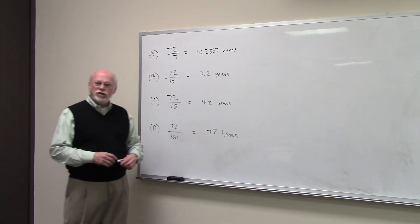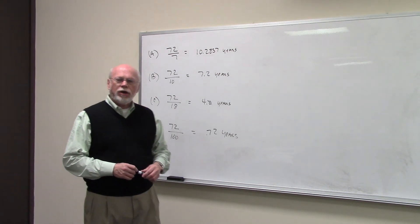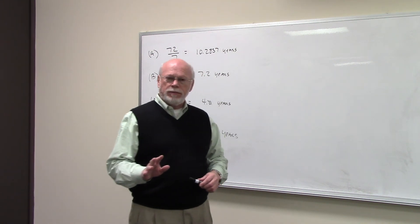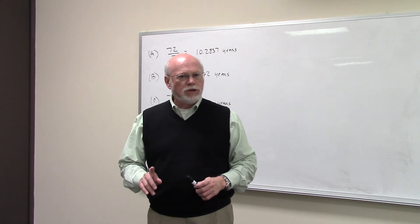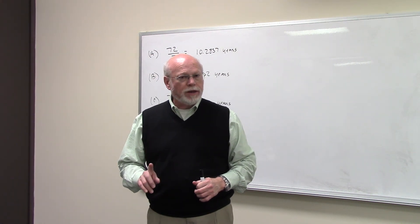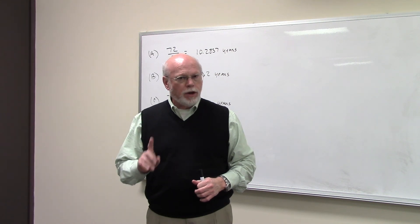This again is the Rule of 72. It tells you how long it takes a lump sum to double. So remember, Rule of 72 is only good for doubling and only good for lump sums.